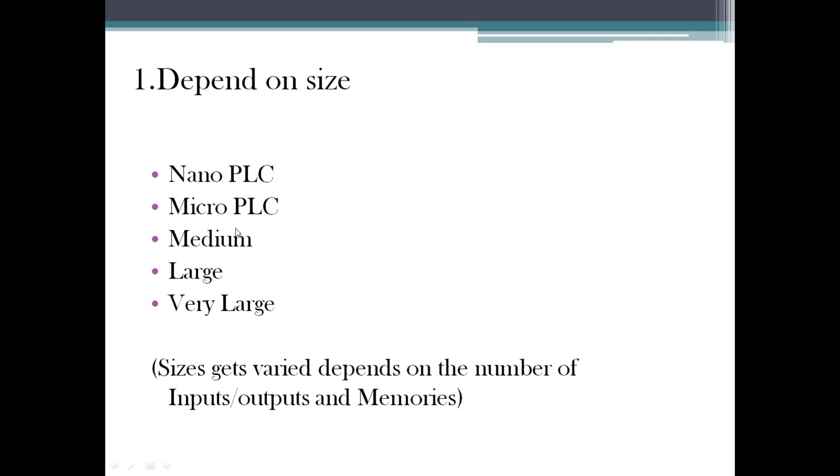It's not that for large scale industry they should use this when nano cannot be used - it's not having such criteria. Depends upon the application, how many IOs - for a college project you can go with micro PLC. A food processing industry can use a medium scale.